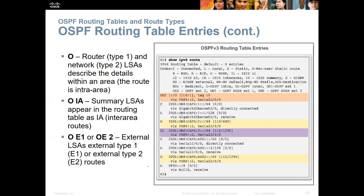Here we have another example, but this is for IPv6. Again, O, O IA, O E1, O E2 — same thing for IPv6. Inter-area routes, external type 1, external type 2, router type 1, network type 2. Pretty much the same for IPv6.